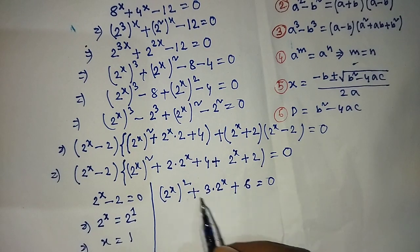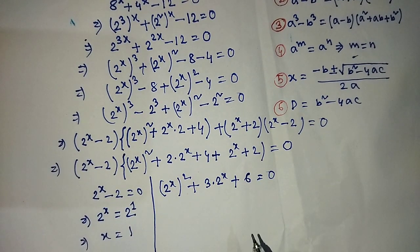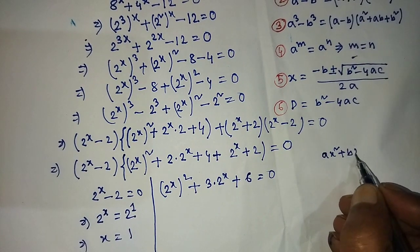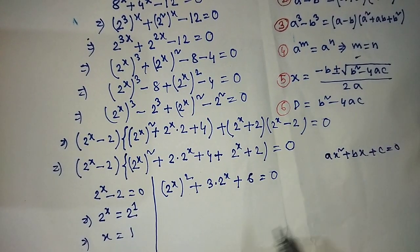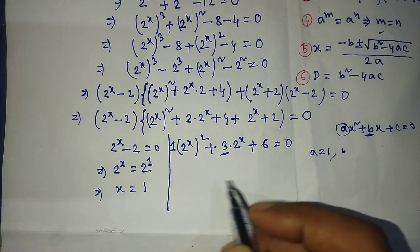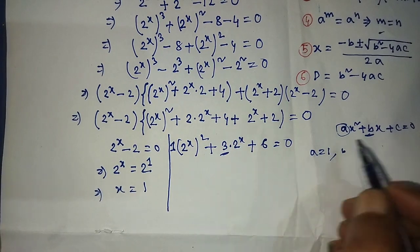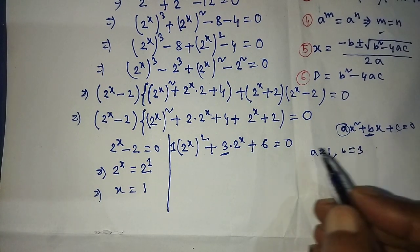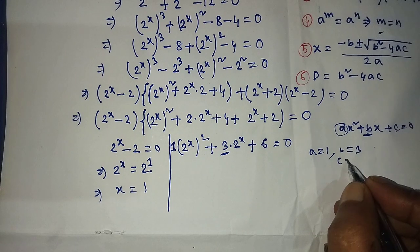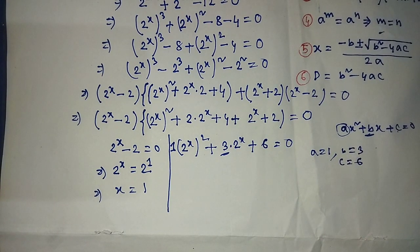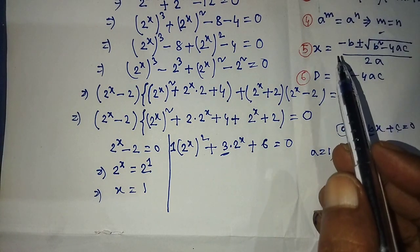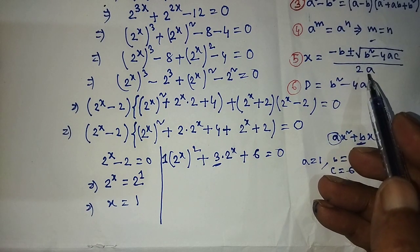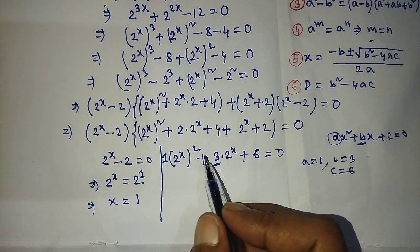We also have to solve the second equation: 2 to the power x whole squared plus 3 into 2 to the power x plus 6 equals 0. We compare this with ax squared plus bx plus c equals 0, so a equals 1, b equals 3, and c equals 6. We apply the quadratic formula: x equals minus b plus or minus root over of b squared minus 4ac, all over 2a, to find the value of 2 to the power x.